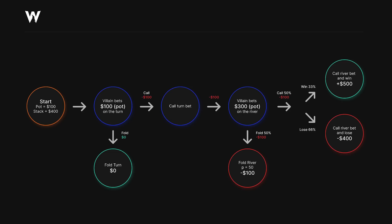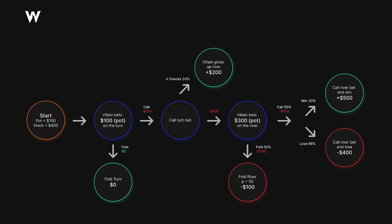So why do we ever call down with a static bluff catcher? Villain needs a give-up range — hands that bet the turn then give up on the river. When they give up, we win the pot: $100 plus their turn bet, totaling $200. If this happens often enough, we recuperate our turn bet. The math shows we need them to give up on the river at least a third of the time and bet again two-thirds of the time. Their give-up frequency should equal our pot odds on the turn regardless of bet size. That's how you recuperate your money with a static bluff catcher — through villain giving up on later streets.